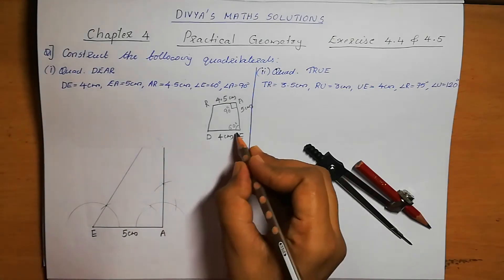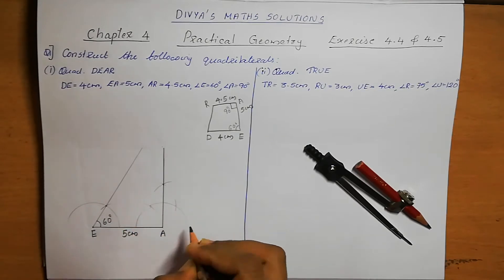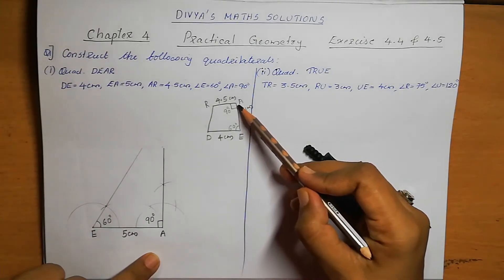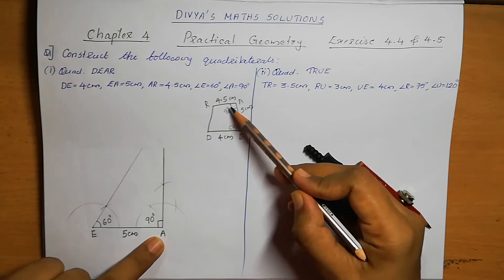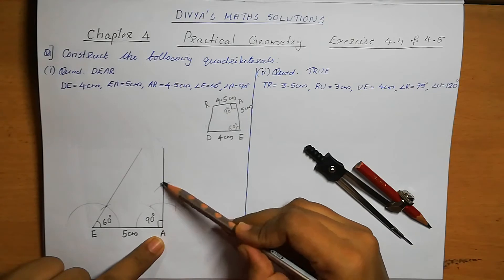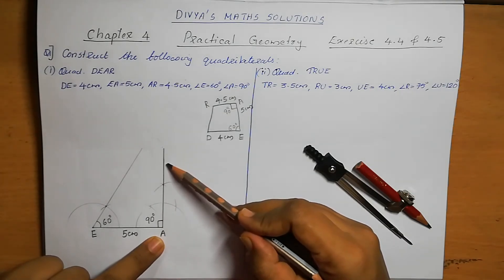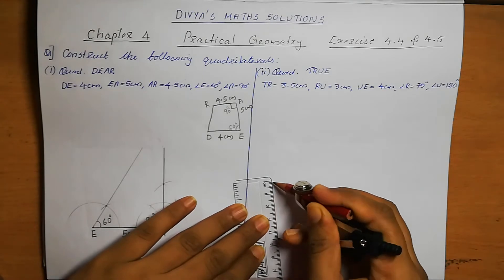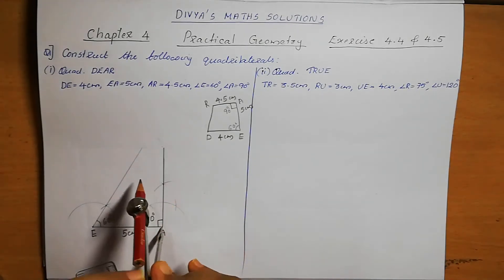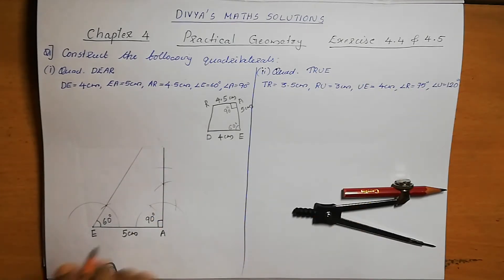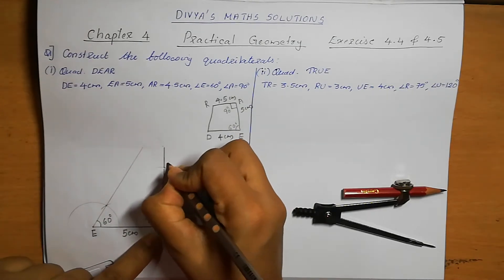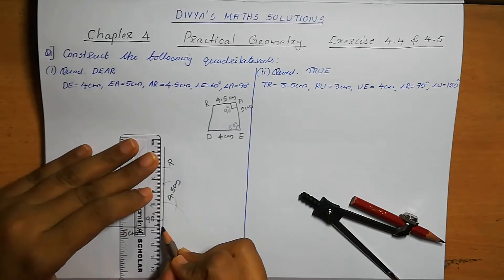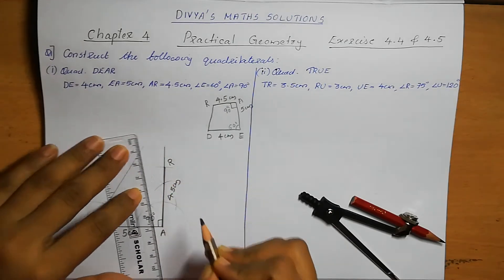Now we have the angles: angle E is 60 degrees and angle A is 90 degrees. From A, AR distance is 4.5 cm. So take 4.5 cm on the compass and cut it on the 90-degree line from A. This cutting point is R. AR is 4.5 cm — we got point R.